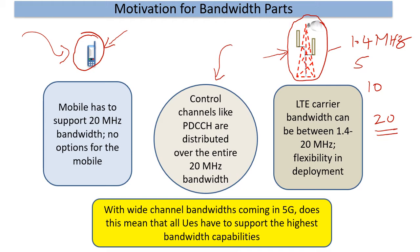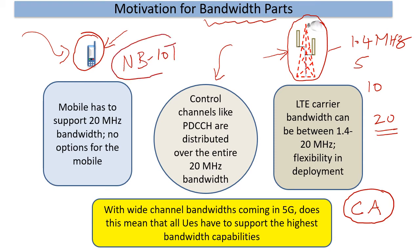The only way to really increase the net bandwidth of the transmission is to go for things like carrier aggregation, which has its own challenges. To attack this problem, 5G NR proposed the idea of bandwidth parts. There were multiple angles to this. One of the challenges that LTE faced when accommodating an IoT specification called NBIoT was that they had to redesign a lot of things, because NBIoT did not even support the basic 1.4 megahertz bandwidth. There were also challenges when LAA was deployed because the unlicensed band has its own challenges.